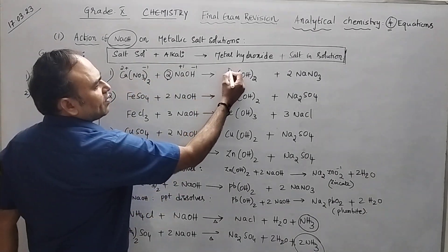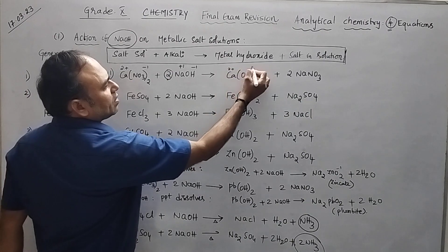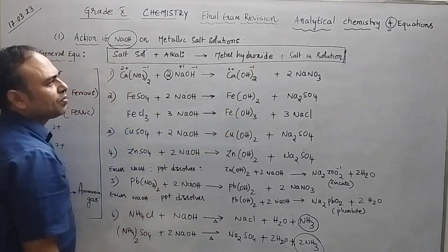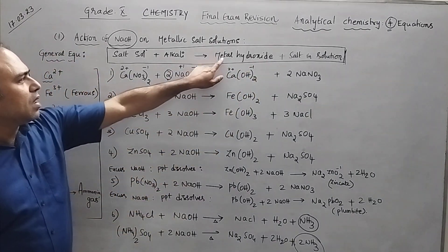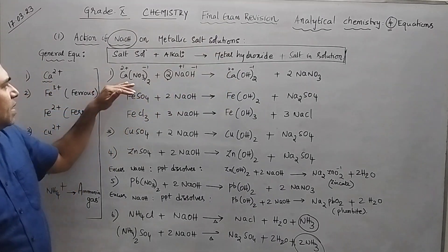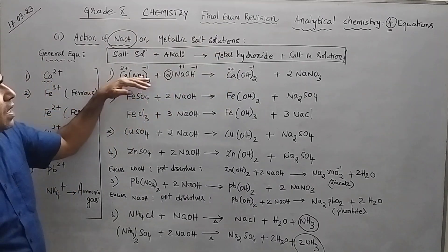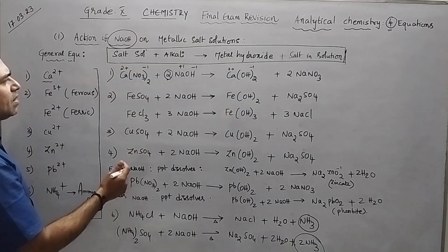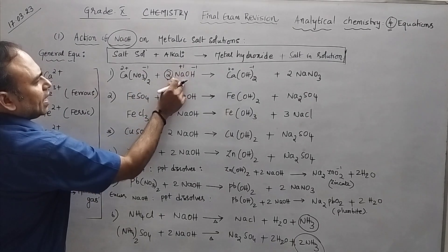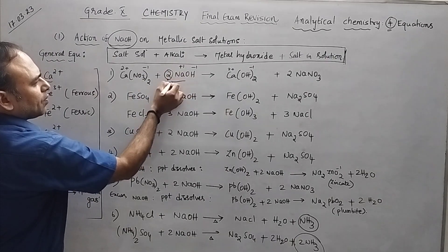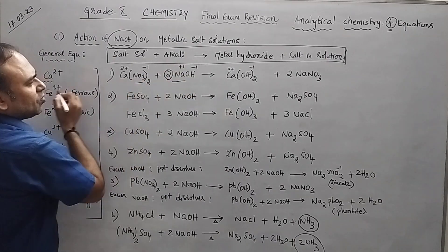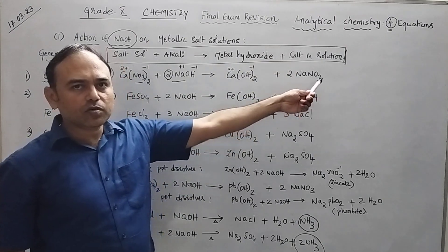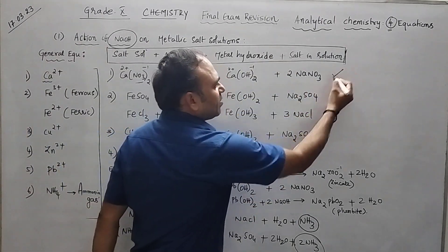If the positive ion is 2+, make the negative also 2−. So Ca²⁺ combined with 2 OH⁻ gives calcium hydroxide. What remains? You have Na⁺ and NO₃⁻, which combine to give NaNO₃ (sodium nitrate) as the salt. Hope you have understood the first equation — very simple.